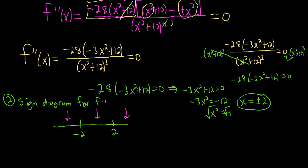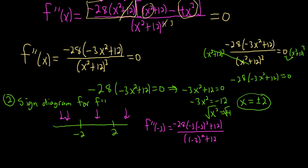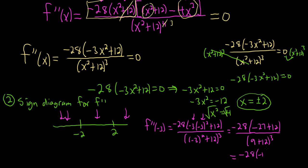Let's pick easy numbers. How about negative 3? f double prime of negative 3: negative 28 times (negative 3 times (negative 3) squared plus 12), all over ((negative 3) squared plus 12) cubed. That's negative 28 times (negative 27 plus 12), over (9 plus 12) cubed. This is negative 28 times negative 15, over 21 cubed — positive because negative times negative is positive. So here it's concave up.